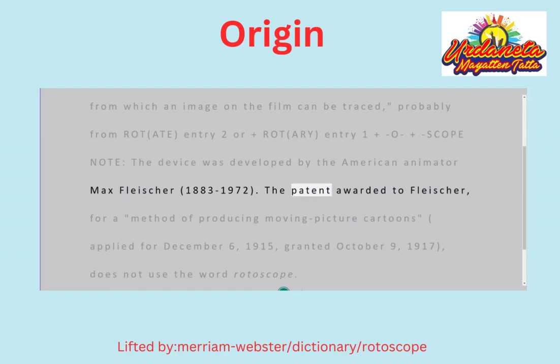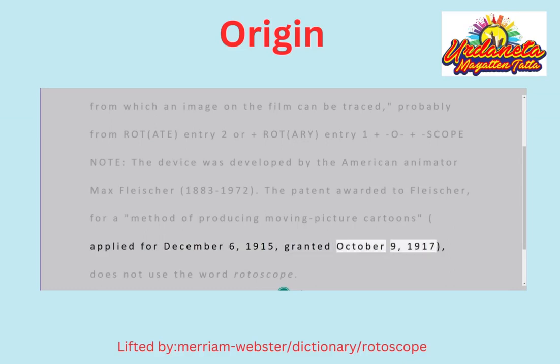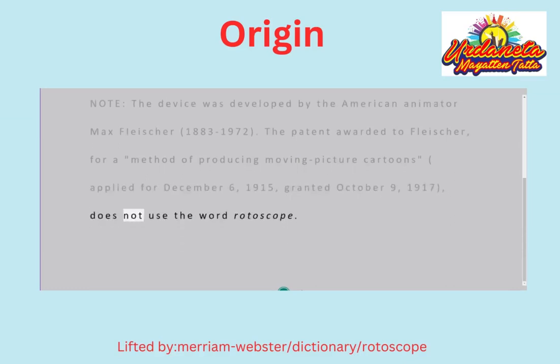The patent awarded to Fleischer for a method of producing moving picture cartoons — applied for December 6th, 1915, granted October 9th, 1917 — does not use the word ROTOSCOPE.